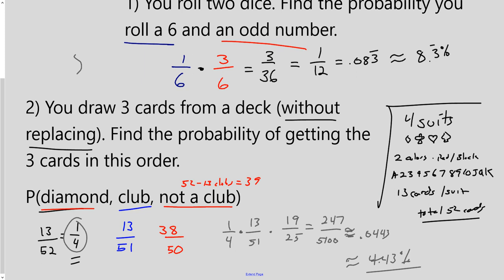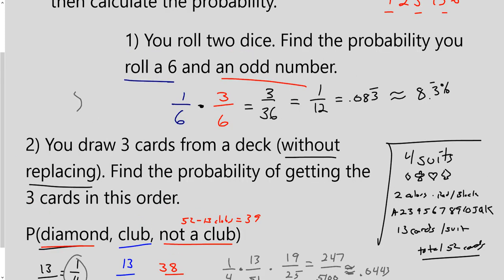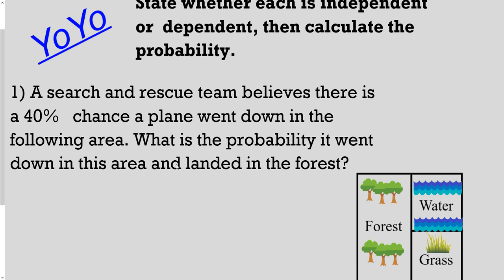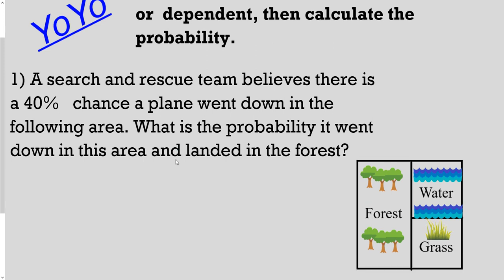So it's only going to happen about four times if you try it 100 different times. Now here's a problem to try. A search and rescue team believes there is a 40% chance a plane went down in the following area. What is the probability that it went down in this area and then landed in the forest? Go ahead and pause, decide whether it's dependent or independent, and then find the probability.